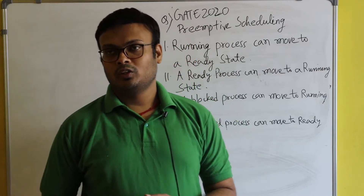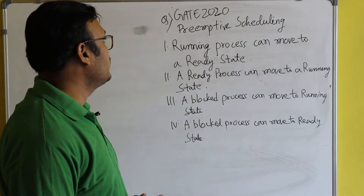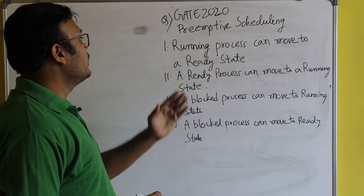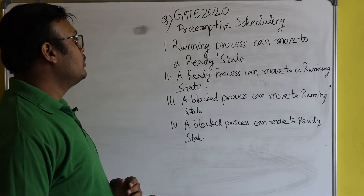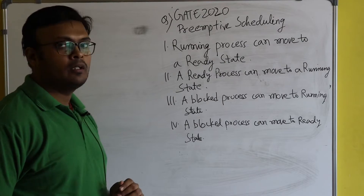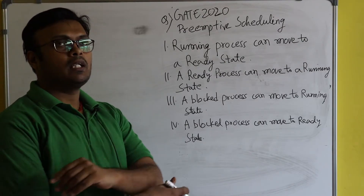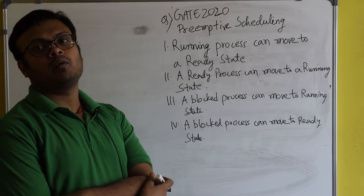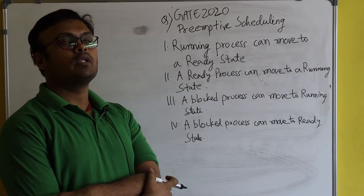Now let's get back to the topic. This is a GATE 2020 question regarding preemptive scheduling algorithms. They have given four statements and we have to select the correct ones. It's a multi-select option type — from 2021 they introduced multi-select questions, meaning more than one option can be correct.